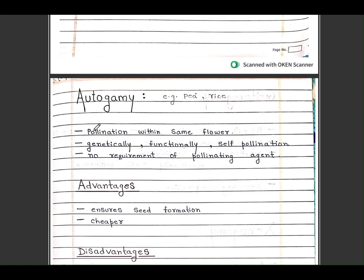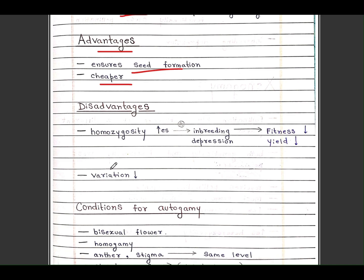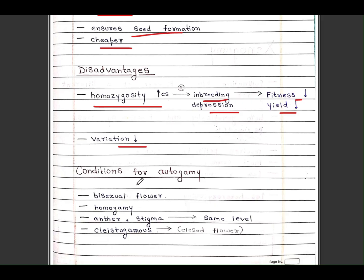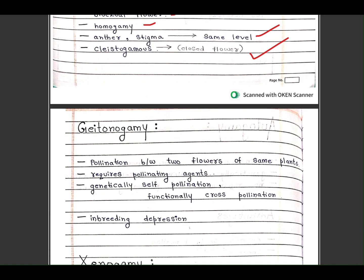Let's study autogamy deeply. Pollination within the same flower is called autogamy. Genetically and functionally self-pollination with no requirement of pollinating agents. Advantages: ensures seed formation, cheaper. Disadvantages: homozygosity, inbreeding depression, fitness decreases, yield decreases, variation decreases. Conditions for autogamy: bisexual flower, synchrony or homogamy, anther and stigma at same level, cleistogamy with closed flowers.